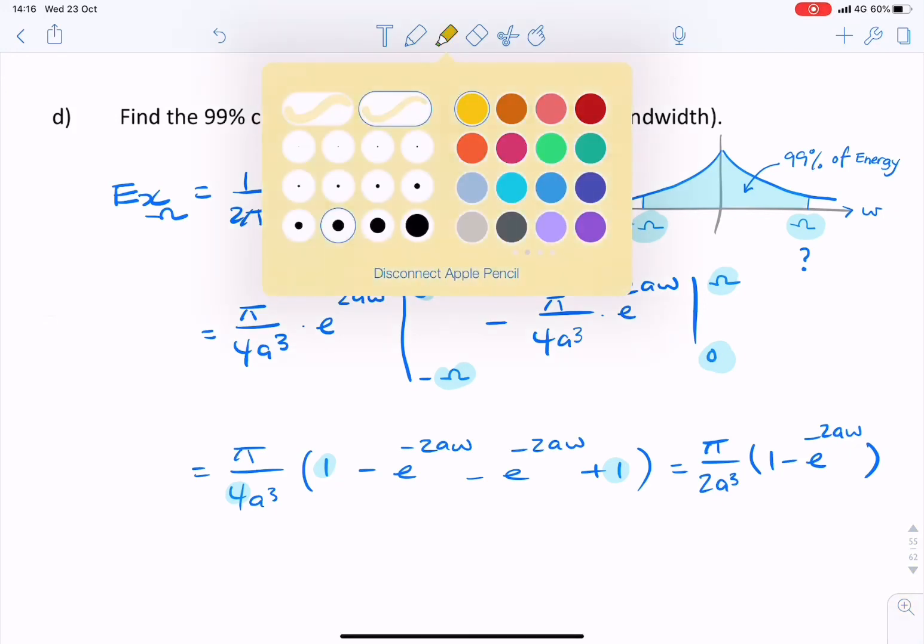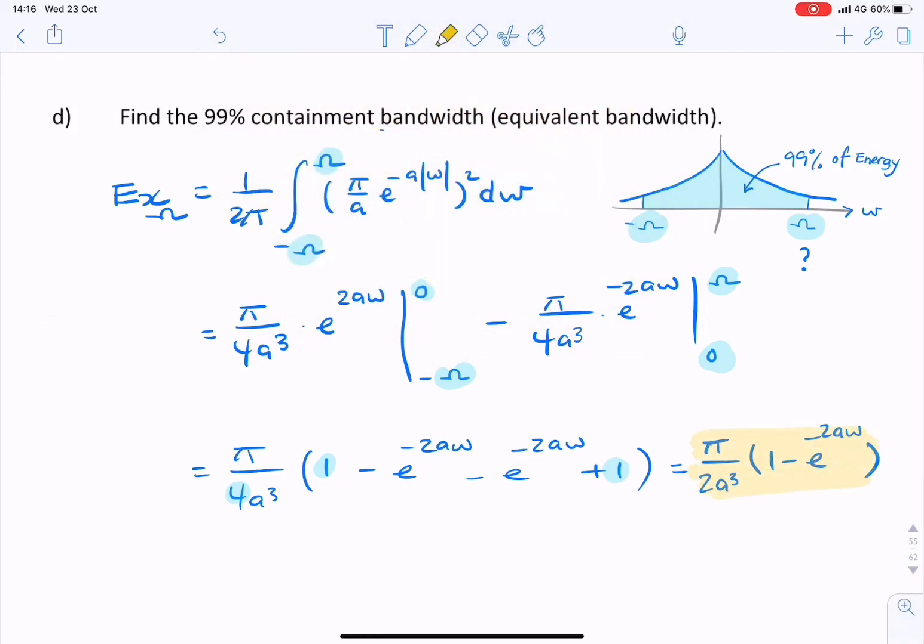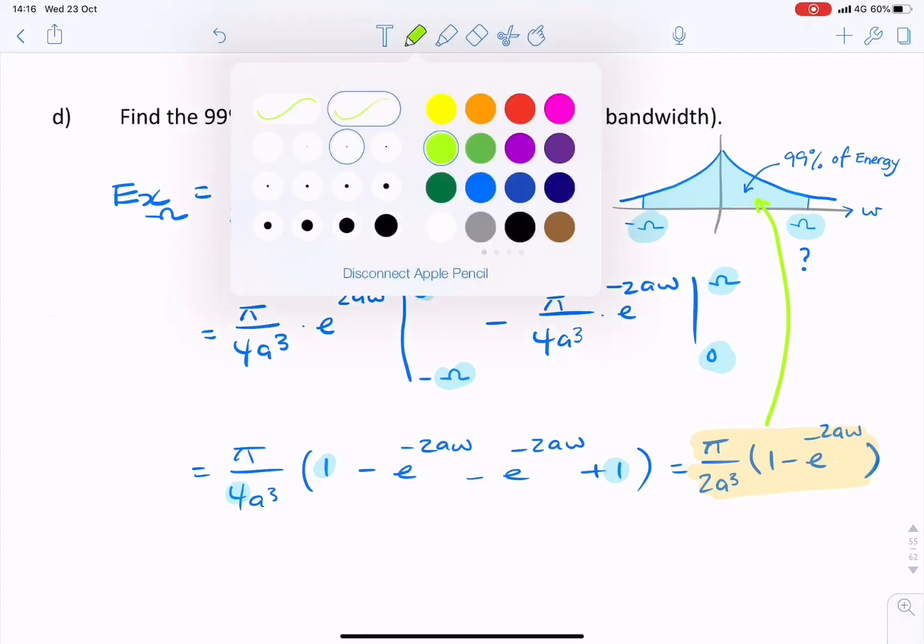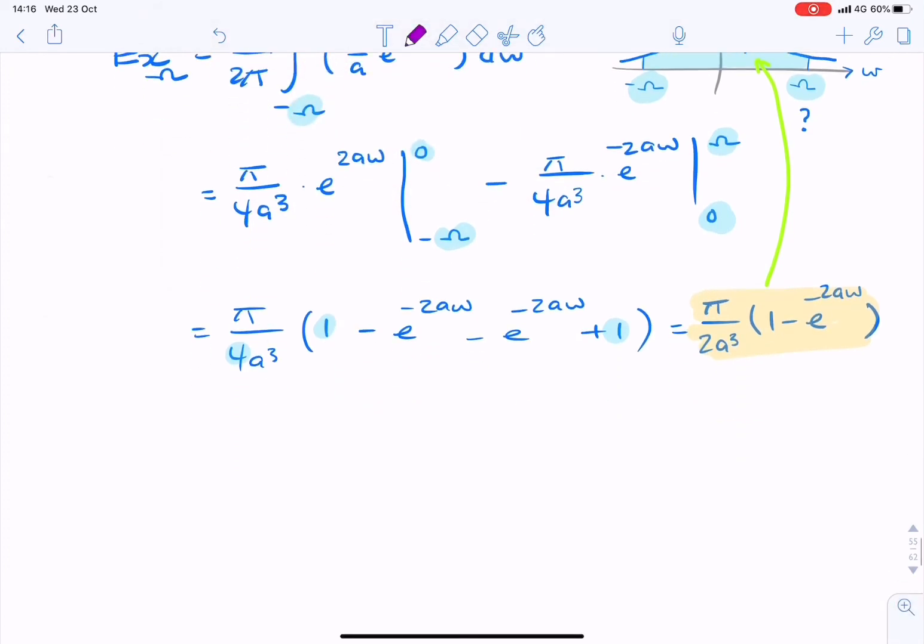So what have I just found? I've now found the energy contained within that range that we identified. So that's the energy, Ex. Well, let's call it Ex omega. So I've just found Ex omega, and the ratio of Ex omega divided by Ex should be 99%. Or we can write it as 99 over 100. And the π over 2a cubed factor is common between Ex omega and Ex. So the ratio is simply 1 minus e to the minus 2aω.